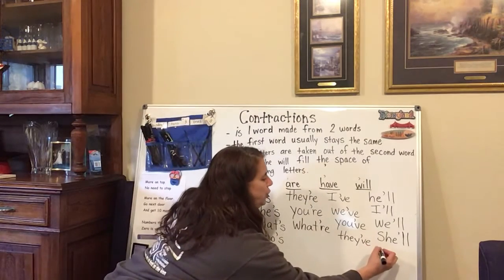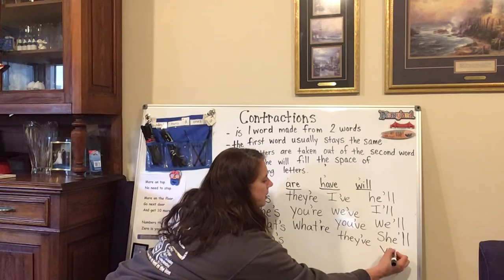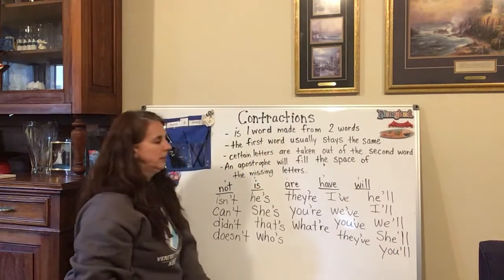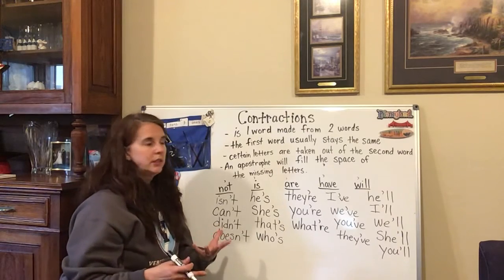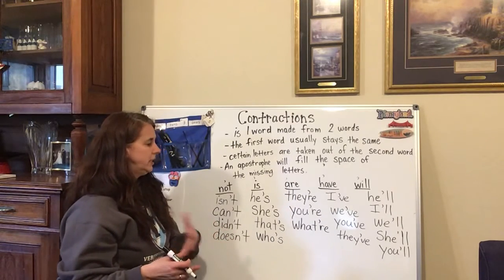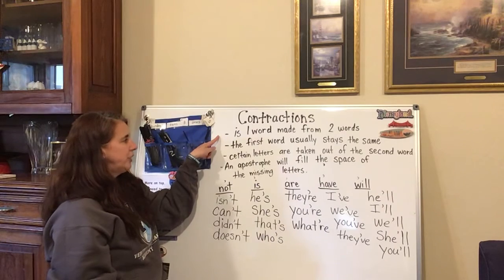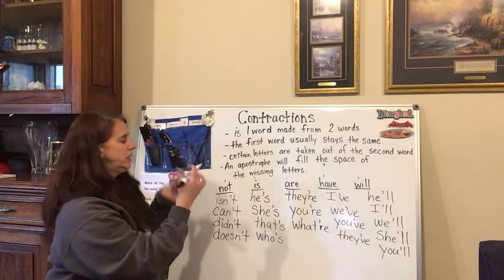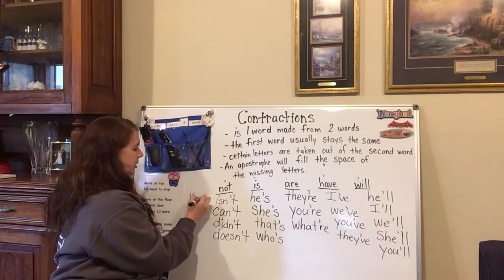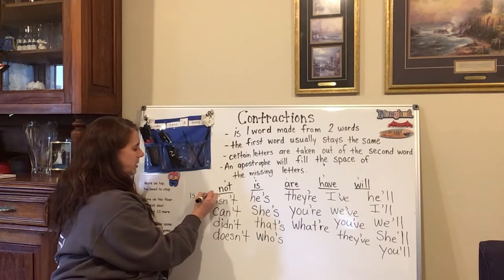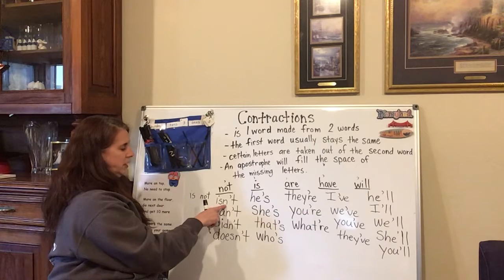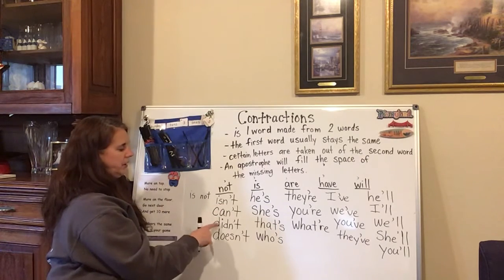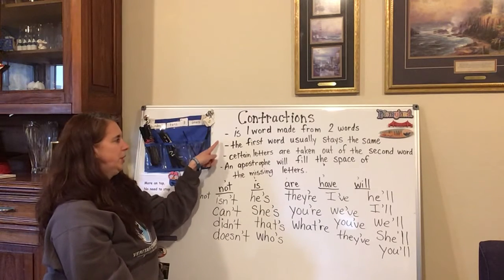'You will' — that's another one. 'You will have the best time at the park.' So again, contractions: a contraction is one word made from two words. Our two words 'is' and 'not' make 'isn't.' 'Can' and 'not' make 'can't.' 'Did' and 'not' make 'didn't.' It's one word made from two words.